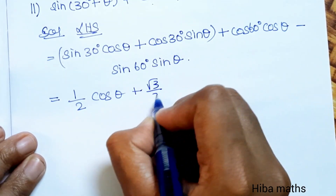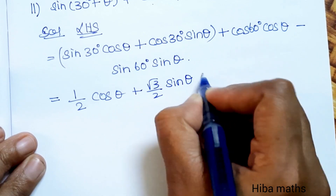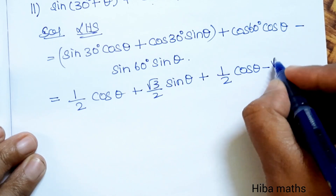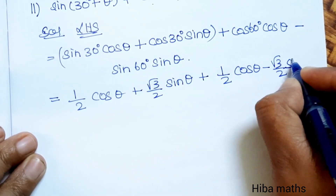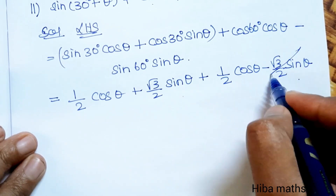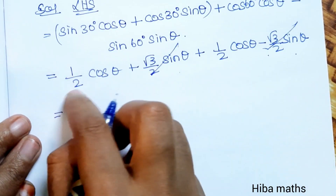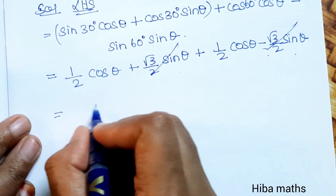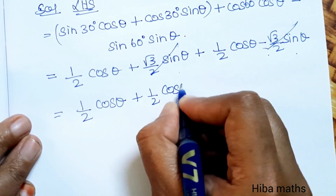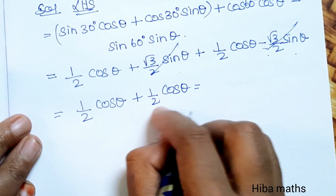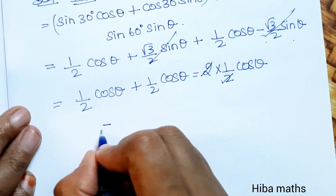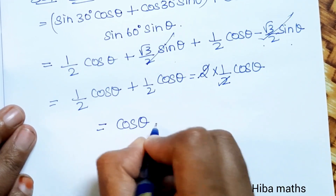Substituting: sin(30°) = 1/2, cos(30°) = √3/2, cos(60°) = 1/2, sin(60°) = √3/2. So LHS becomes (1/2)·cosθ plus (√3/2)·sinθ plus (1/2)·cosθ minus (√3/2)·sinθ. The √3/2·sinθ terms cancel, and (1/2)·cosθ plus (1/2)·cosθ gives cosθ. Hence proved.